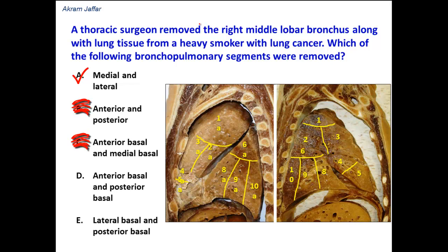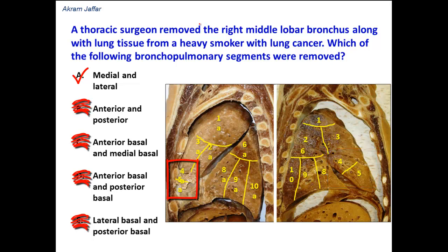Anterior basal and posterior basal are again segments of the lower lobe — that's why they are called basal. Lateral basal and posterior basal are also segments of the lower lobe. In the middle lobe of the right lung, the segments are medial and lateral. If the question had been about the lingula — for example, if the surgeon removed the lingula of the left lung — then the correct answer would be the superior and inferior segments.